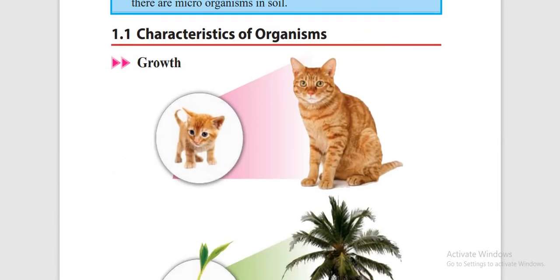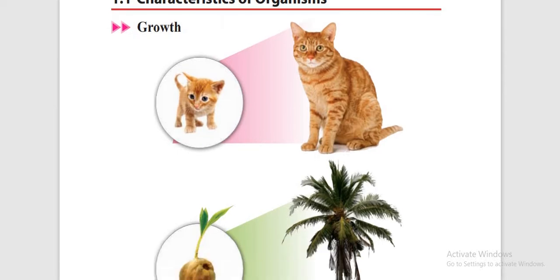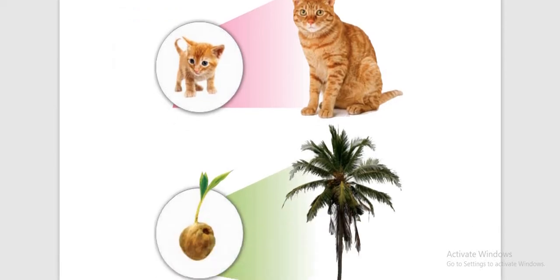The first characteristic of living organisms is growth. Here you can see two pictures: a small kitten has now become a big cat, and a small coconut plant has become a big coconut tree. The weight and size of the kitten and the cat differ. These differences show growth.